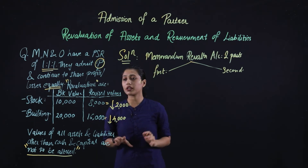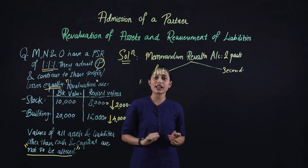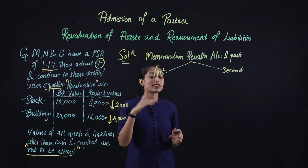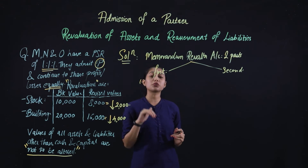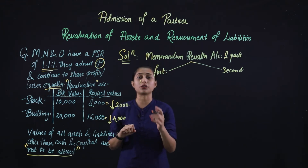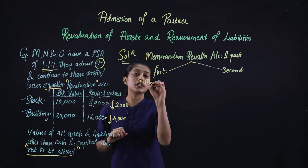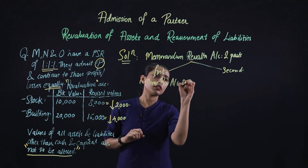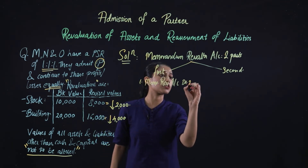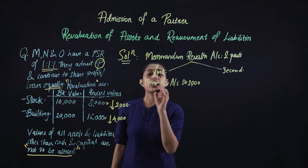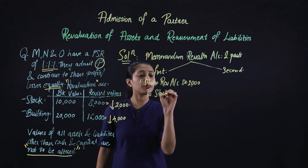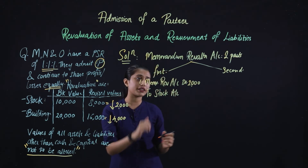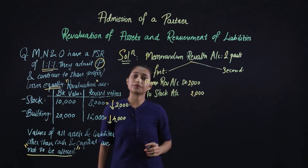The first entry is for revaluation of stock. The stock value has gone down by ₹2,000. Since the asset has reduced, we debit the Memorandum Revaluation Account by ₹2,000 and credit the Stock Account by ₹2,000. Being an asset whose value has decreased, the respective asset account is credited.